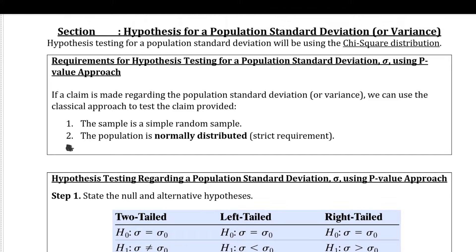Welcome back. We're in the last section of this chapter on hypothesis testing for one population. In this section we're going to talk about hypothesis testing for a population standard deviation or variance. Standard deviations don't have a normal distribution — they follow a chi-square distribution, just like we discovered in the previous chapter when dealing with confidence intervals.